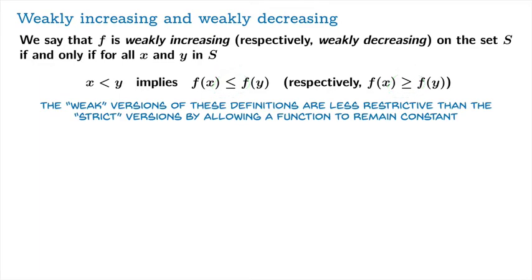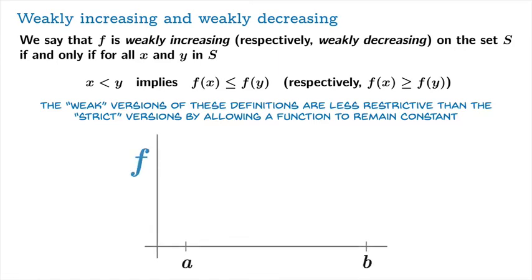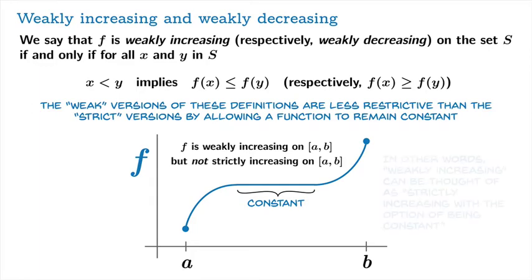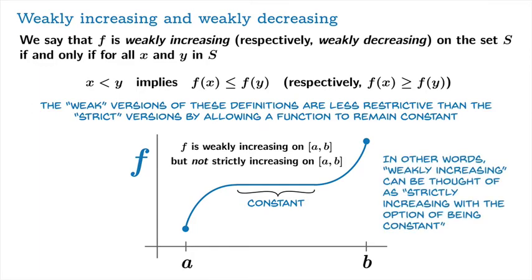The weak versions of these definitions are less restrictive than the strict versions — and thankfully, that's true, because the language would sound pretty weird if it weren't the case. What we're allowing now is the possibility that a function remains constant. For example, f might be weakly increasing on the interval from a to b, but constant on some sub-interval, so we can't claim it's strictly increasing on that interval, since it doesn't make progress as you move from left to right. So weakly increasing is okay, but strictly increasing doesn't work. Weakly increasing can be thought of as strictly increasing with the option of being constant on parts of your set.